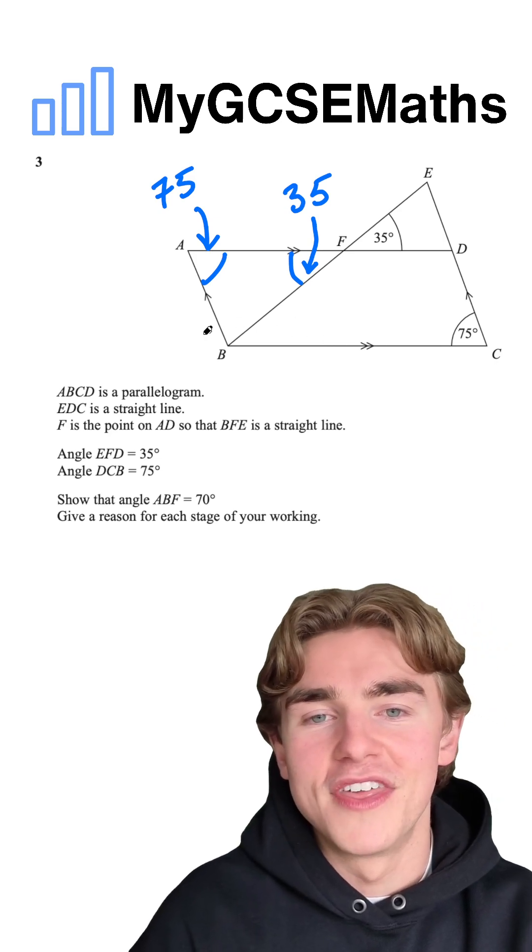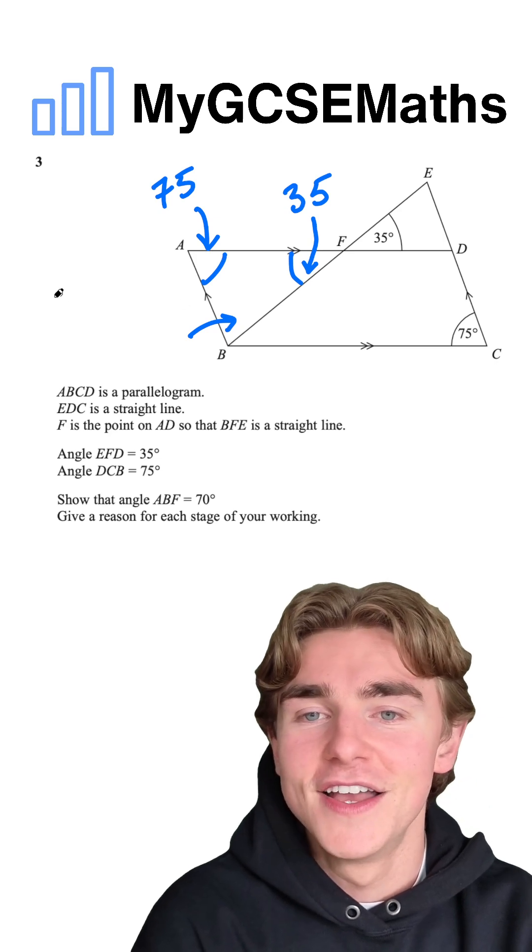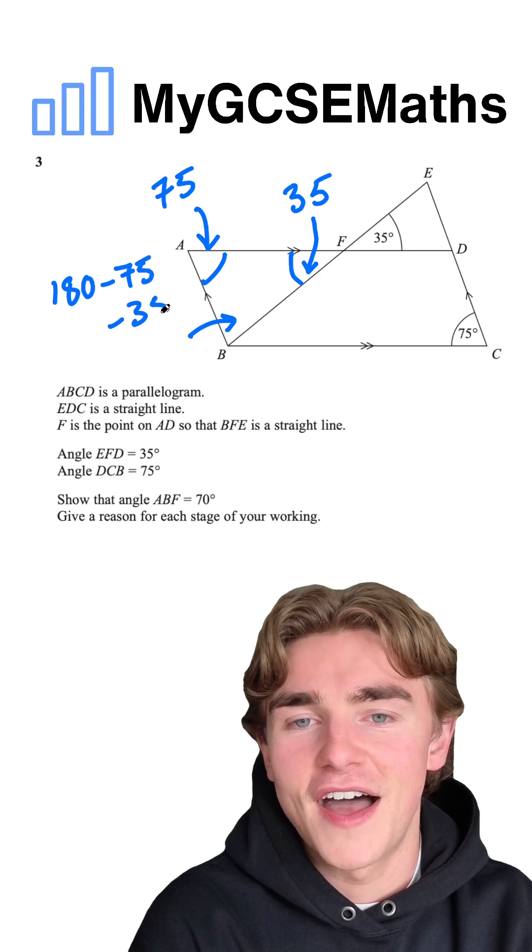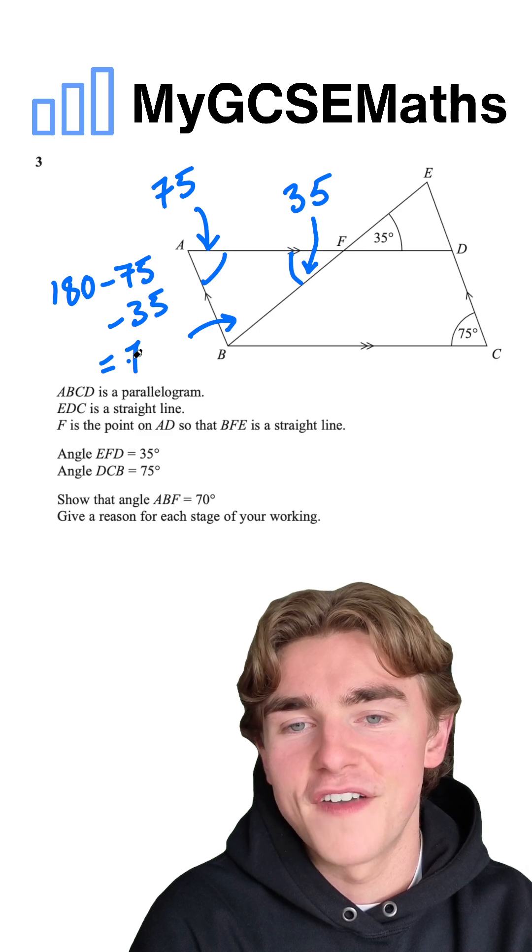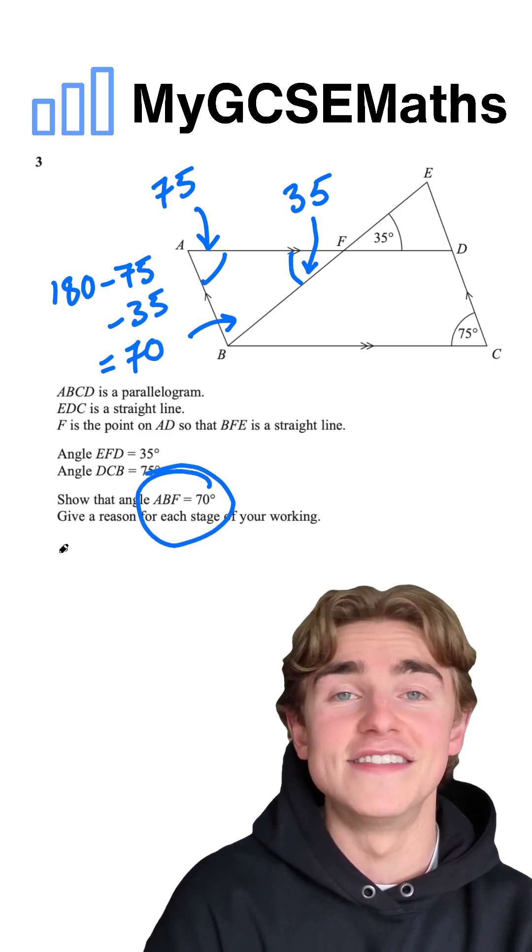Finally, how can we work out this angle here? We know that our angles in a triangle add up to 180. So we can do 180 minus 75 minus 35. And if we did that, it would in fact give us 70, showing that angle ABF is 70.